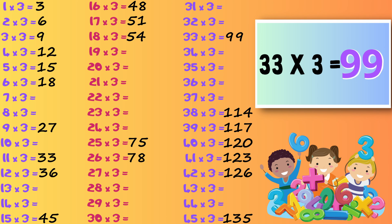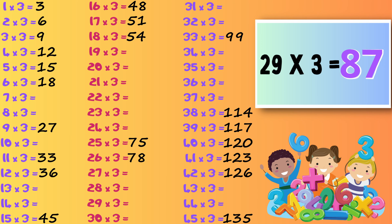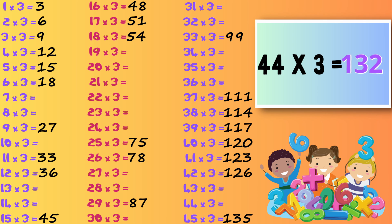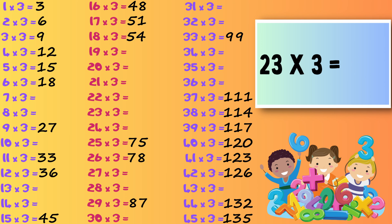Twenty-nine times three — eighty-seven. Thirty-seven times three — one hundred and eleven. Forty-four times three — one hundred and thirty-two. Twenty-three times three — sixty-nine.